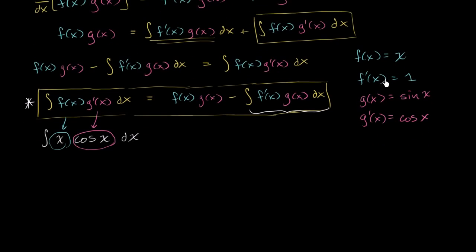Now, let's see, given these assumptions, let's see if we can apply this formula. The right-hand side says f(x) times g(x). So f(x) is x, g(x) is sine of x.